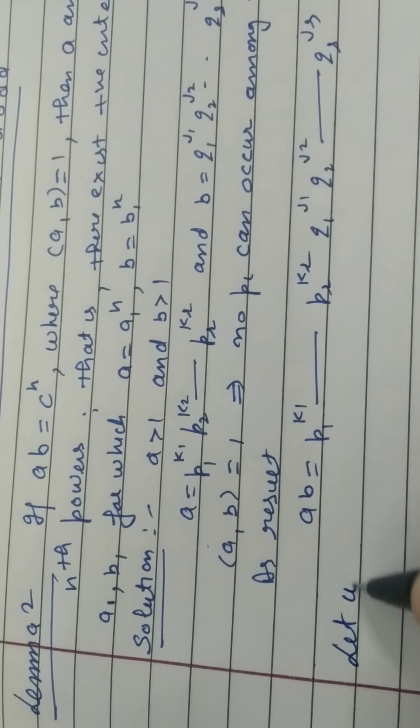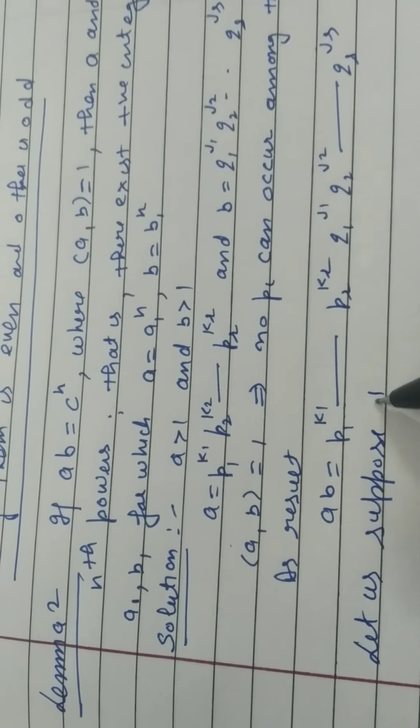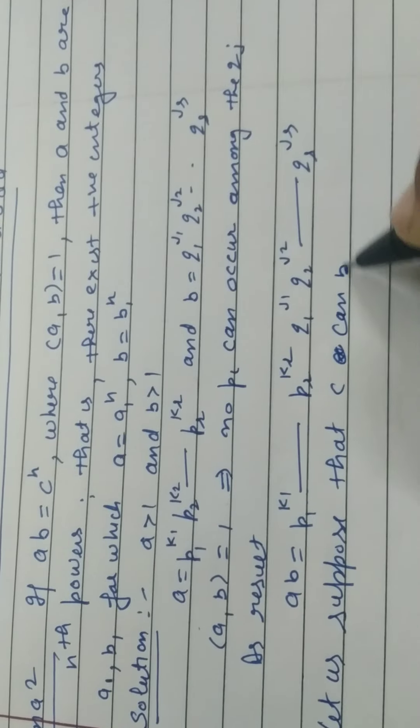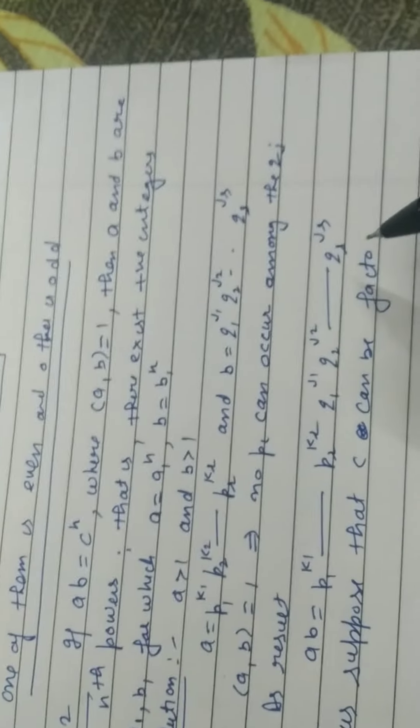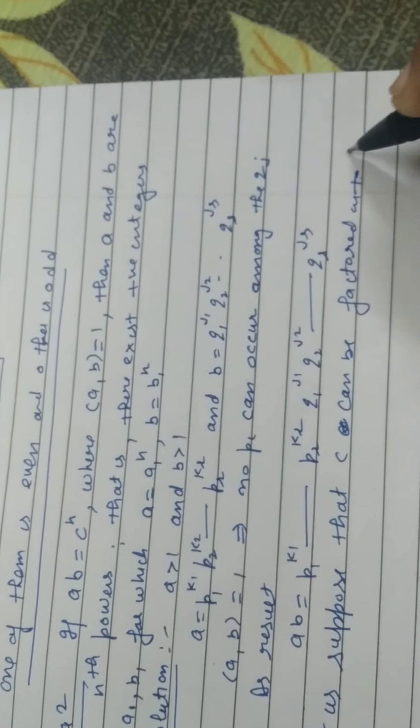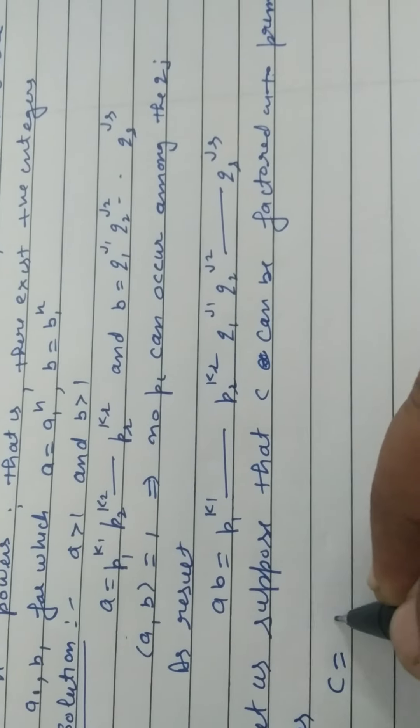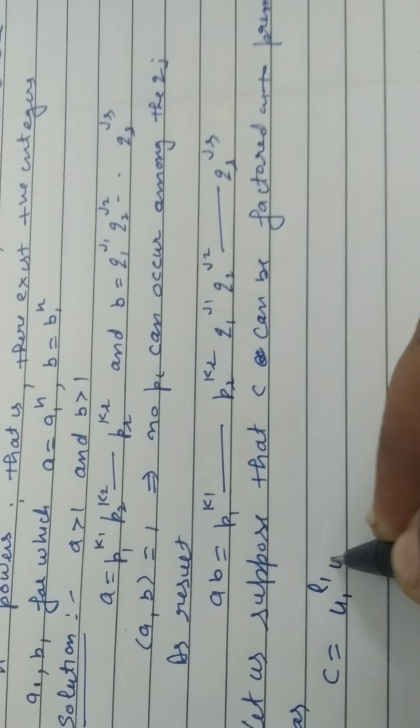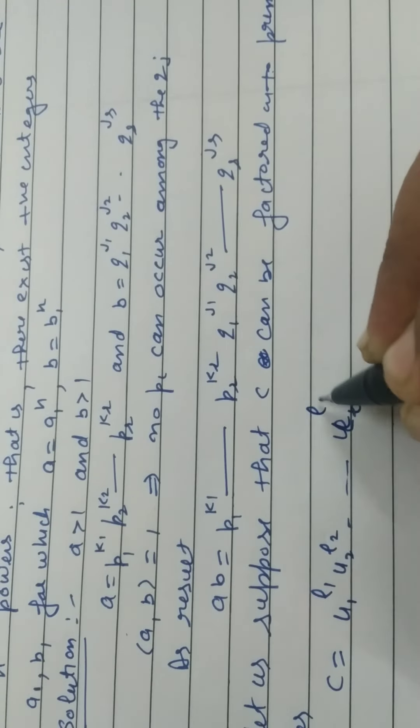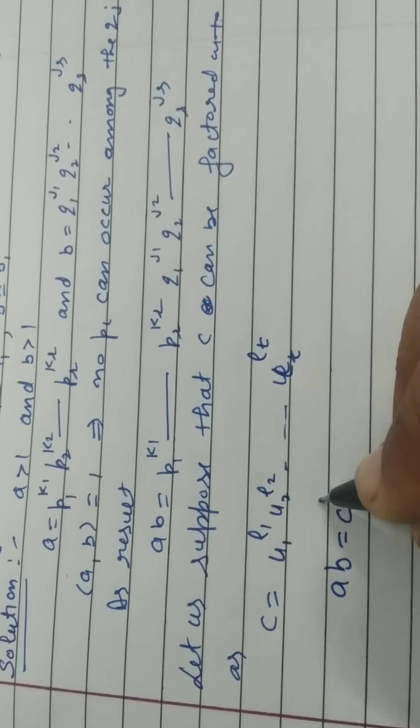Let us suppose that C can be factorized into primes. As C is equal to U1 to the power L1, U2 to the power L2, UT to the power LT.